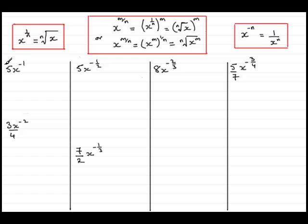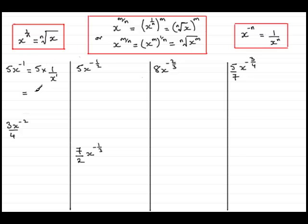Let's start by looking first at 5x to the power minus 1. This is 5 times x to the power minus 1. What is x to the minus 1? We can use this rule here: x to the minus 1 would be 1 over x to the power 1. So we've got to multiply two fractions together — this is 5 over 1. Doing that, we get 5 times 1 which is 5, all divided by 1 times x to the 1, which is simply x.